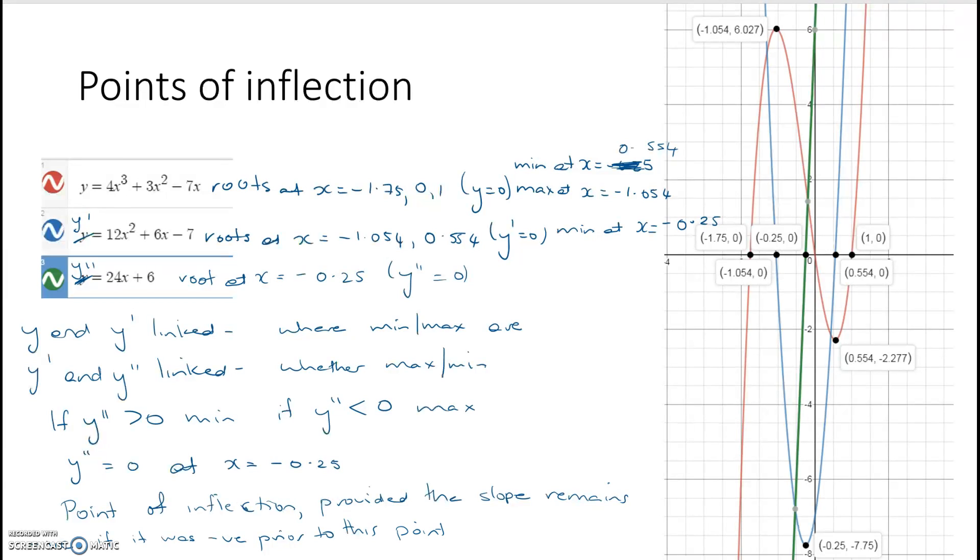And you can see here that where x is equal to negative 0.25, up here somewhere, then the slope here is negative before the point, and the slope after the point is negative. So, the point of inflection, I'll write this up the top now. The point of inflection is where y double dash is 0.